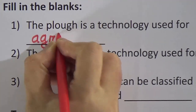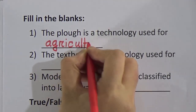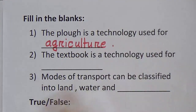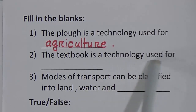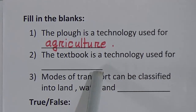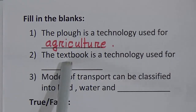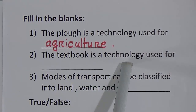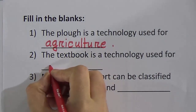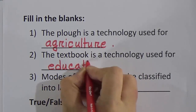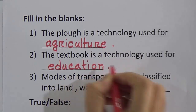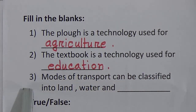Number two fill in the blanks: the textbook is a technology used for — think about it. The textbook is a technology used for education. So we will write here: education.